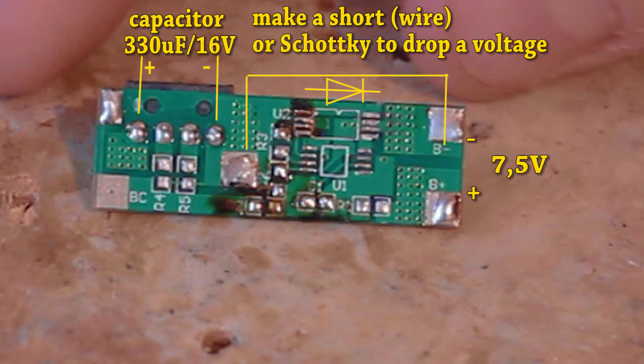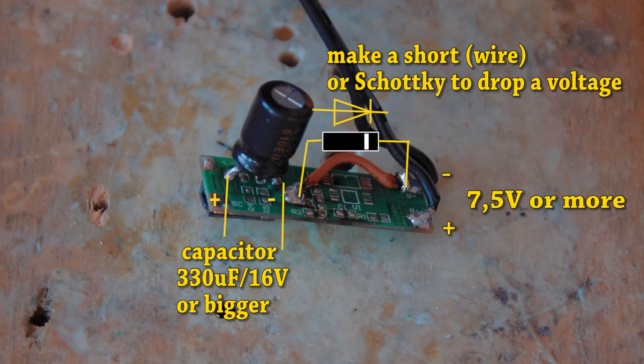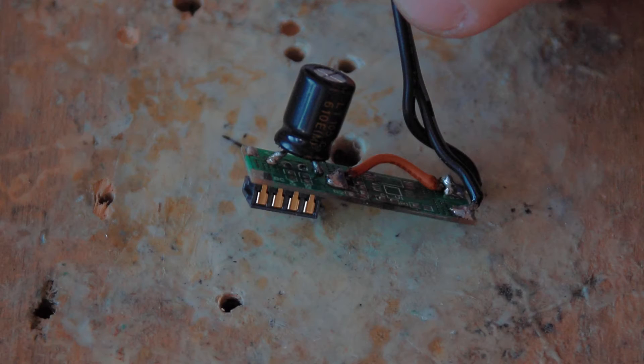And here it is, the point-to-point schematic of your new circuit. If you have a 7.5V power supply like me, you don't need a Schottky diode, just use wire instead. It will be good if you solder a small capacitor like 330μF/16V.